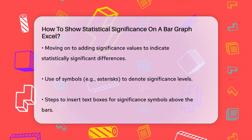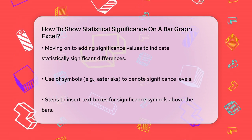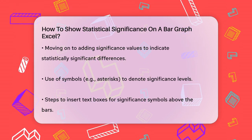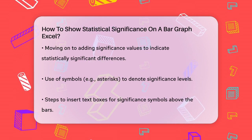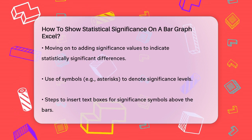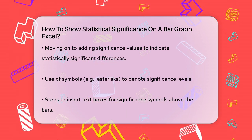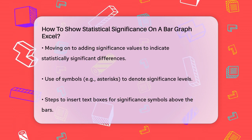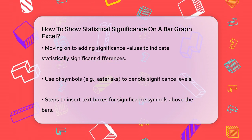For example, if the p-value is less than 0.05, you might use a single asterisk, and if it's less than 0.01, you might use double asterisks. To add these symbols, click on the text box and type in your symbol. You can then move this text box to the appropriate position above the bar. Adjust the font size, color, and style as needed to make it clear and readable.